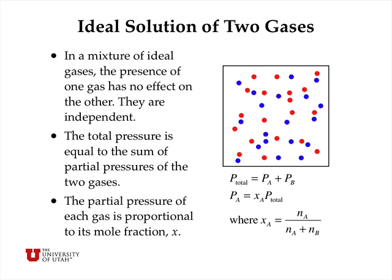So the total pressure is equal to the sum of partial pressures of the two gases, and the partial pressure of each gas is proportional to its mole fraction, according to the ideal gas law.